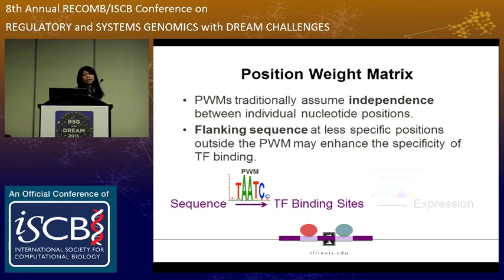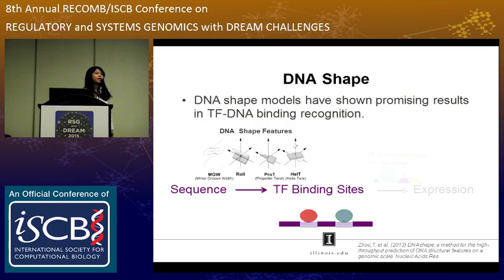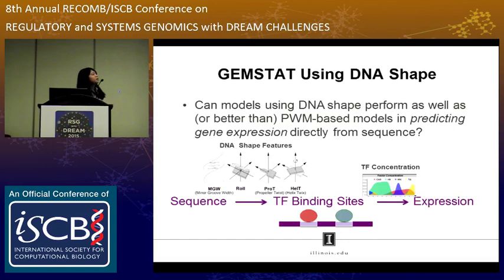Many alternative models have been proposed to handle this problem, and one among them is the DNA shape model. DNA shape contains four types of features: MGW (minor groove width), roll, propeller twist, and helix twist. Many studies show that DNA shape-based models can have better predictions for TF-DNA binding. In this work, we want to go a step beyond — not only predict TF binding sites, but use DNA shape data to predict gene expression. The main question is: can models using DNA shape perform at least as well as, or even better than, PWM-based models in predicting gene expression?